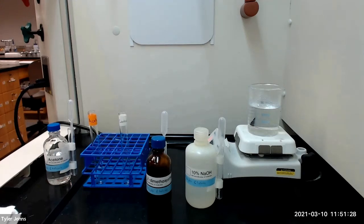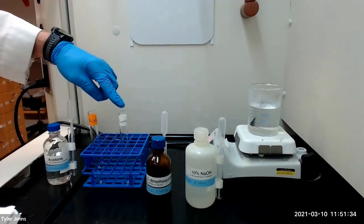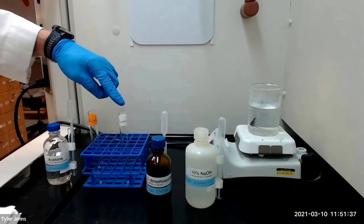We will now perform the iodoform test using acetone as our test compound. For reference, we will be using a negative control that will contain all of the reagents except for the acetone.